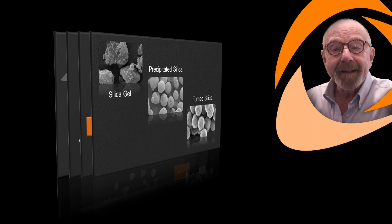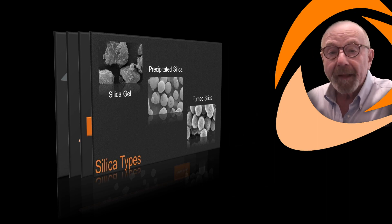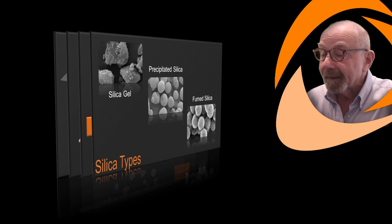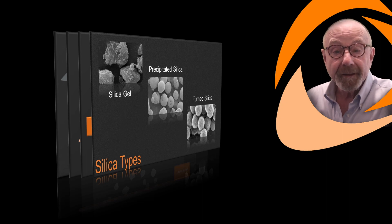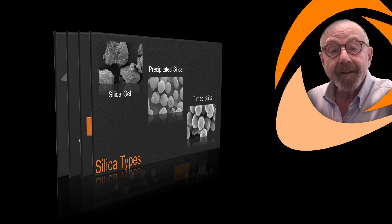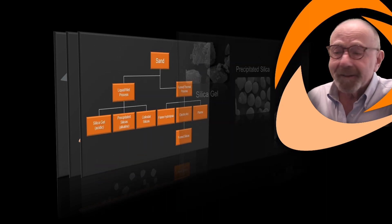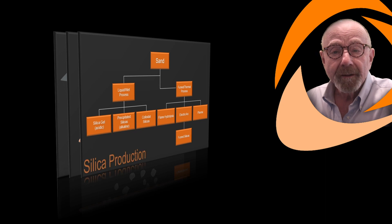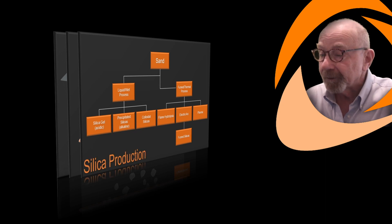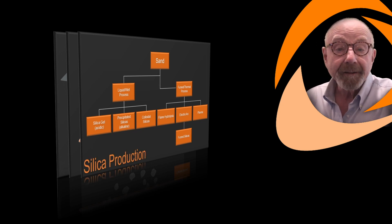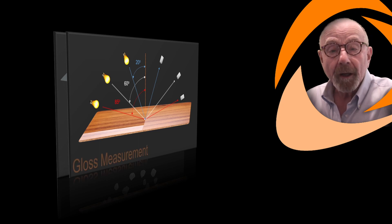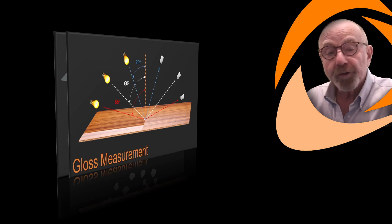Next, we'll review different types of matting agents — natural, synthetic, organic, inorganic — including calcium carbonate, silica gel, precipitated silica, and fumed silica. It would be nice to understand how these products are produced, most of which starts with good old-fashioned sand, silicon dioxide, or silica. Depending on the angle we view the paint or coating, we may perceive different gloss levels, flop, or sheen.